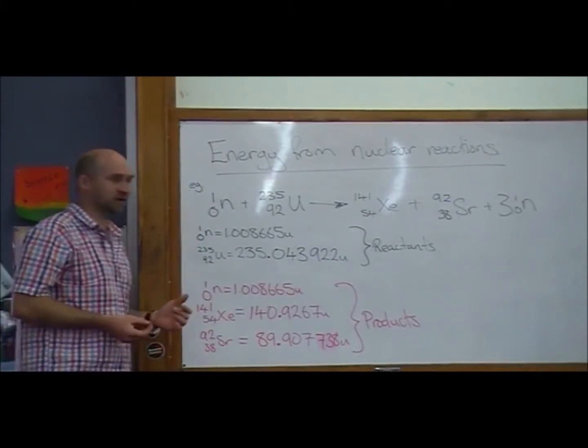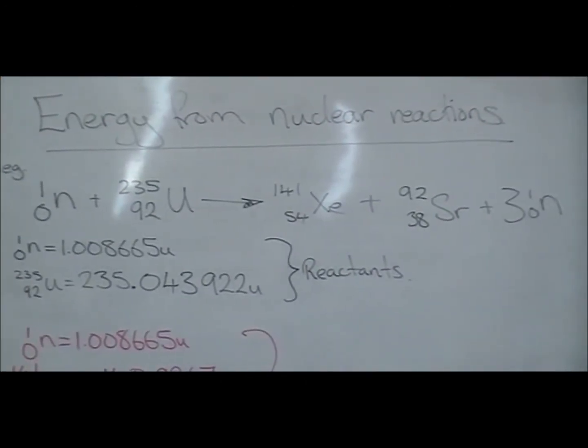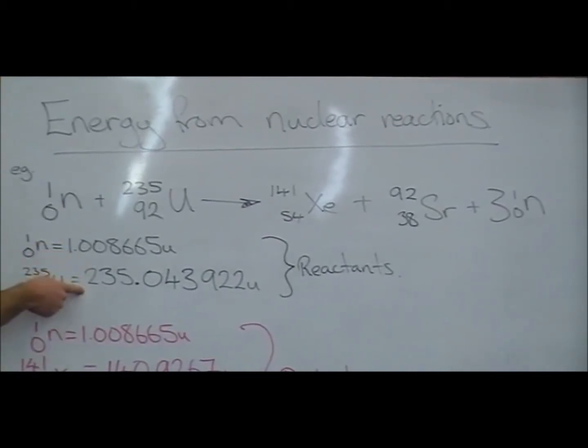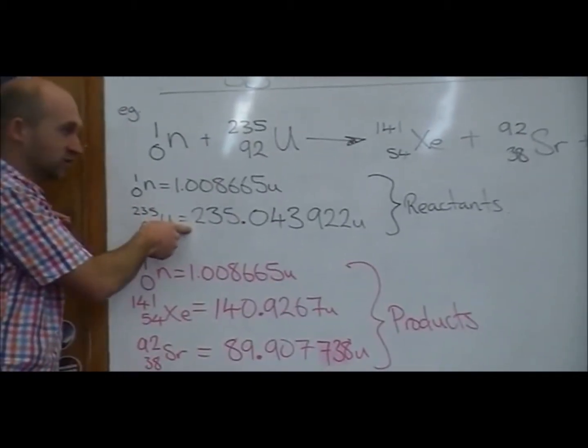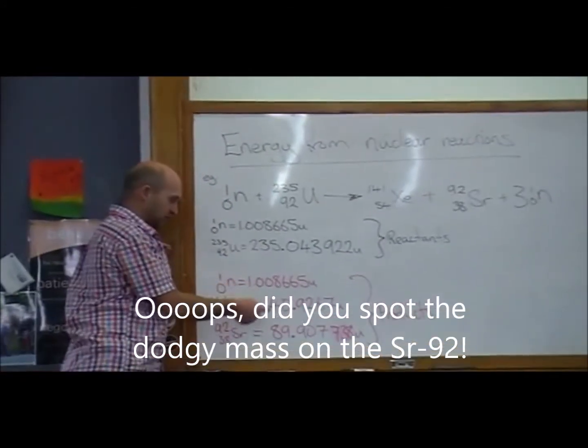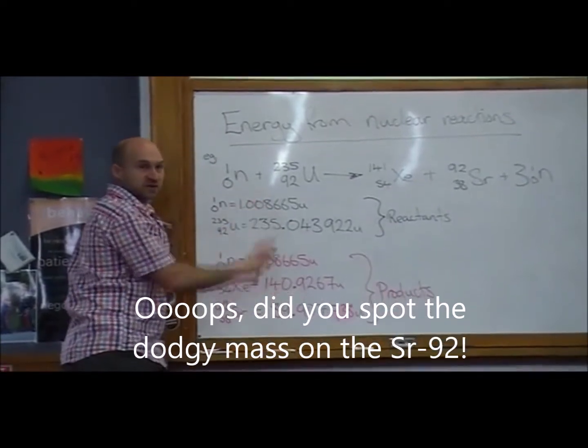So what we have to do now is work out how much mass has been lost during this nuclear reaction. We're going to add together the mass of the neutron with the mass of the uranium 235, and we're going to add together the three neutrons with the xenon and the strontium, and we're going to see what the difference between those masses is.